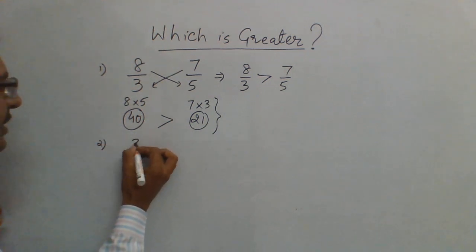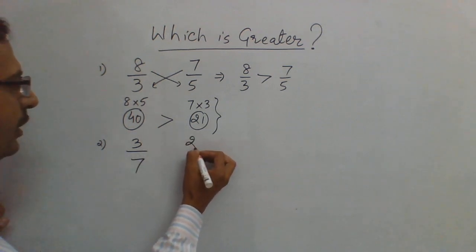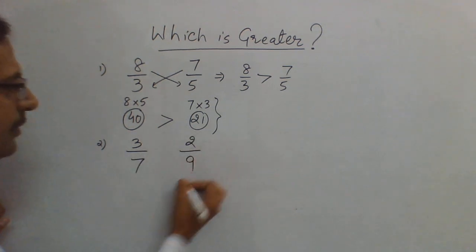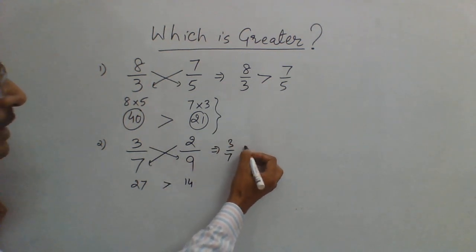Suppose you are given 3 upon 7 and say 2 upon 9. Now see, 3 into 9 is 27. You have to write the product below the numerator which you are considering. So 3 into 9 is 27, 2 into 7 is 14. So 27 is greater. Therefore 3 by 7 is greater than 2 by 9.